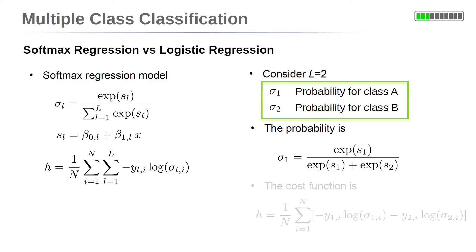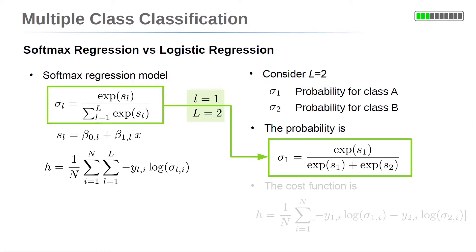σ_1 is a probability for class A, and σ_2 is a probability for class B. The probability σ_1 is given by the exponential function of the first linear model over the sum of this exponential function and the exponential function of the second linear model.